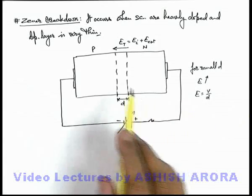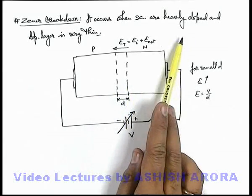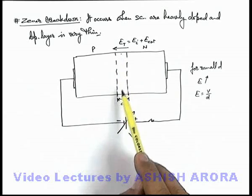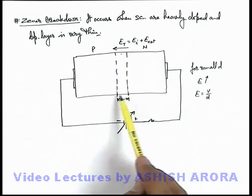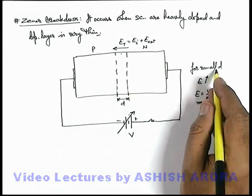So if we consider p-side and n-side to be good conductors as these are heavily doped, and the depletion layer is free from charge carriers, the electric field in the depletion layer will be very high because d is very small.